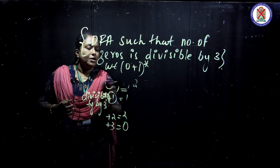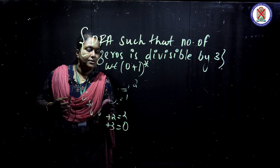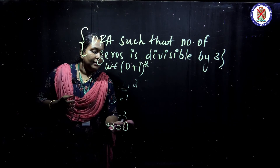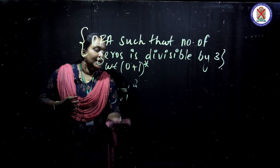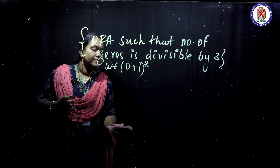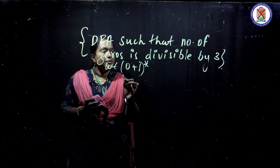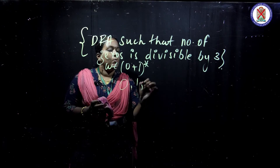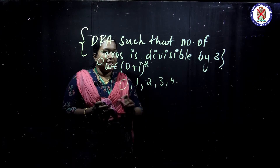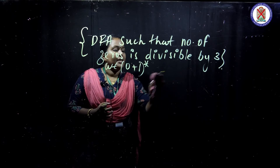The general trick is: if you are checking divisibility by N, the number of possible remainders will be less than N, ranging from 0 to N-1. For example, checking divisibility by 3 gives remainders 0, 1, 2. Checking divisibility by 5 gives remainders 0, 1, 2, 3, 4.